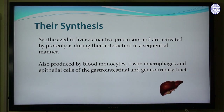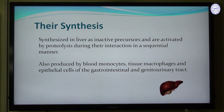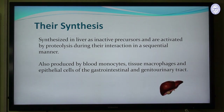These complement proteins are synthesized in the liver as inactive precursors, but afterwards they are activated by proteolysis during their interaction in a sequential manner. These complement proteins are also produced by blood monocytes, tissue macrophages, and epithelial cells of the gastrointestinal and genitourinary tract. Mainly, you should remember that they are synthesized in the liver as inactive precursors and afterwards they are activated.